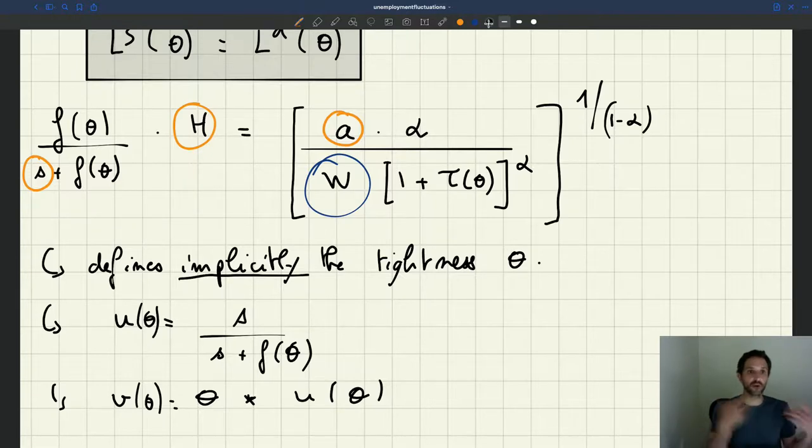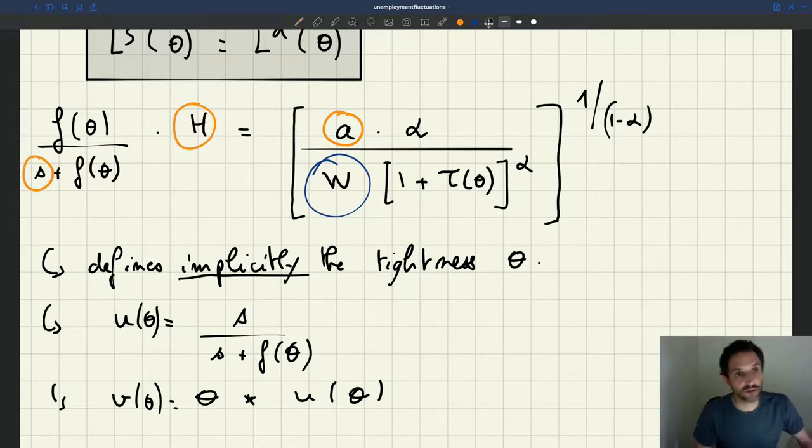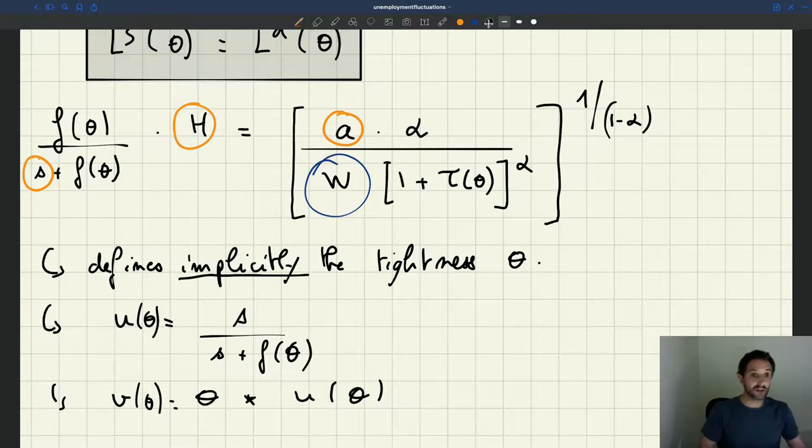So it could be that the worker says, I want that wage, and the firm says yes. It could be that the firm says, look, this is how much we pay for that job? The worker is going to say yes. It could be that there is some bargaining over the wage. Workers and firms try to come to an agreement. It could be many, many things could be going on.